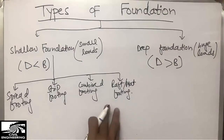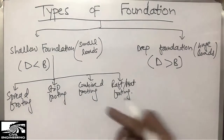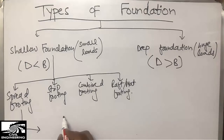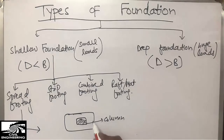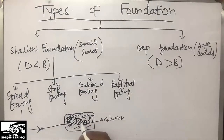No single engineer uses only one type of foundation throughout a project — foundation types may change according to the load condition and soil strata. Spread footing is mainly used for a single column. This is the column, and the footing is provided below to support that one column. We provide reinforcement in both directions in the footing to support the column load, and it is also sometimes called isolated column footing.